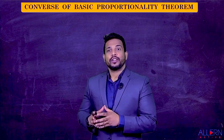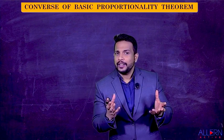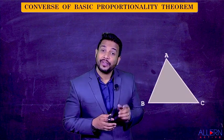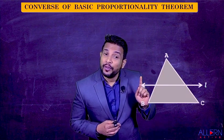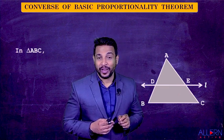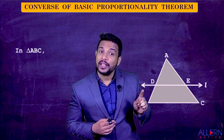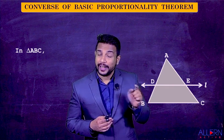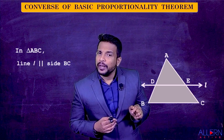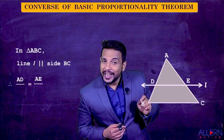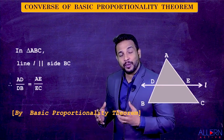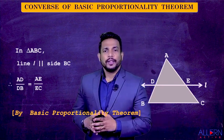Let us understand the converse of the Basic Proportionality Theorem. We already learned the Basic Proportionality Theorem — in a triangle, whenever we have a line parallel to a side, we get the ratios equal: AD upon DB is equal to AE upon EC. So in triangle ABC, we have line L parallel to side BC, and we get AD upon DB equals AE upon EC. The reason written is Basic Proportionality Theorem.